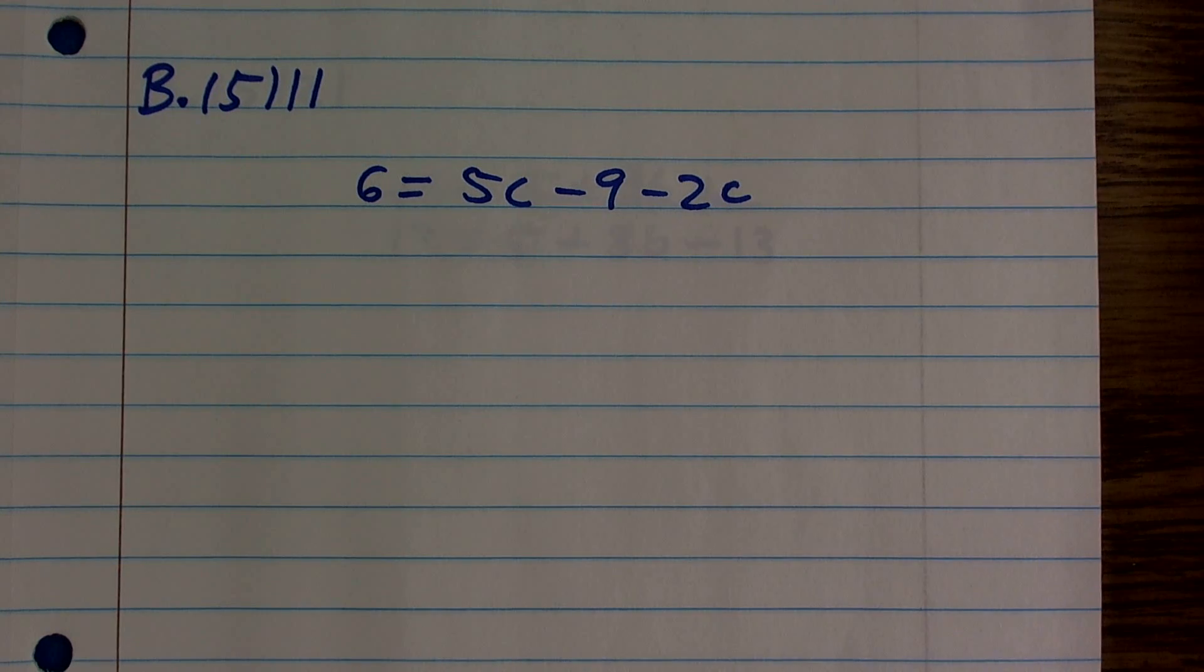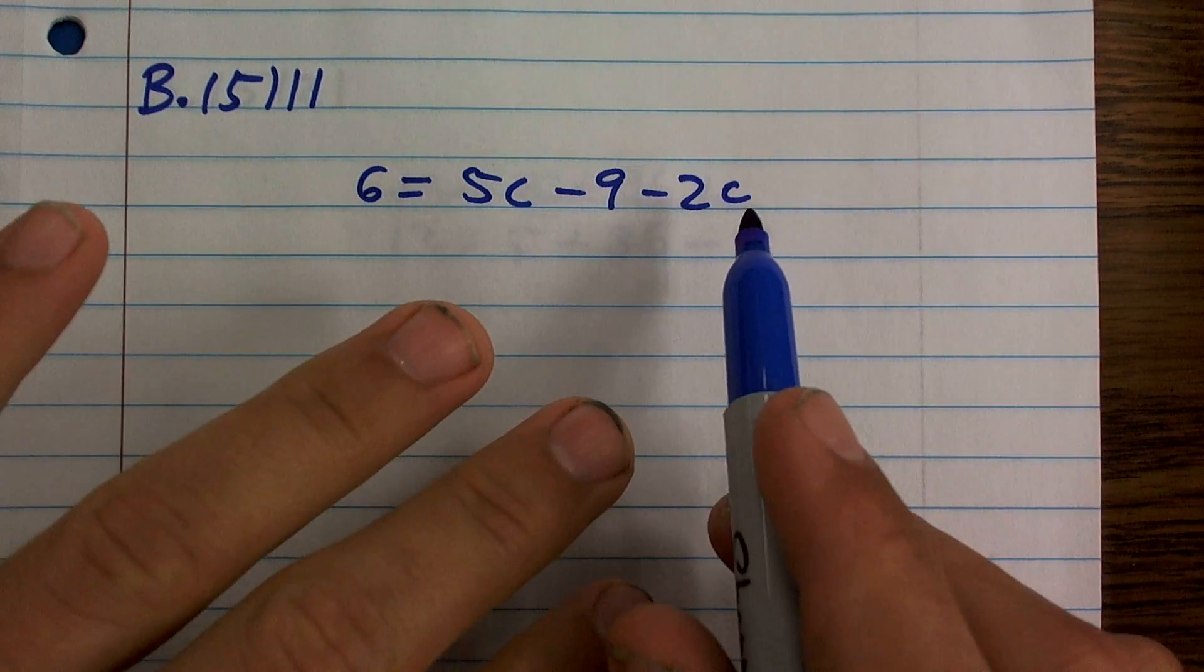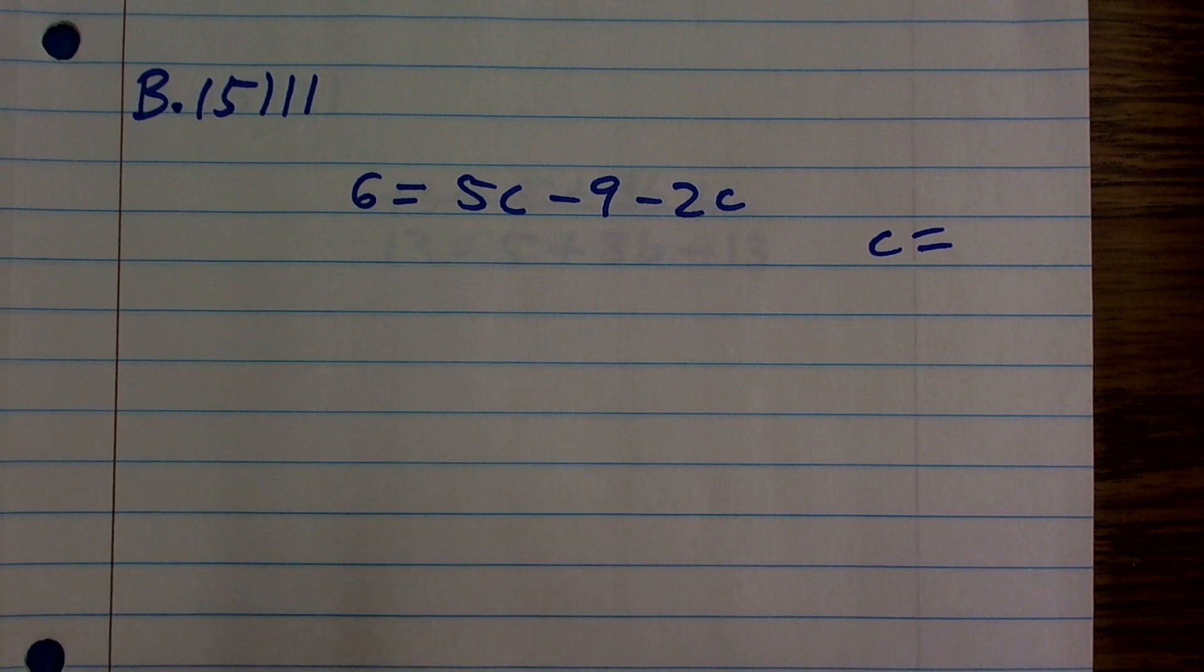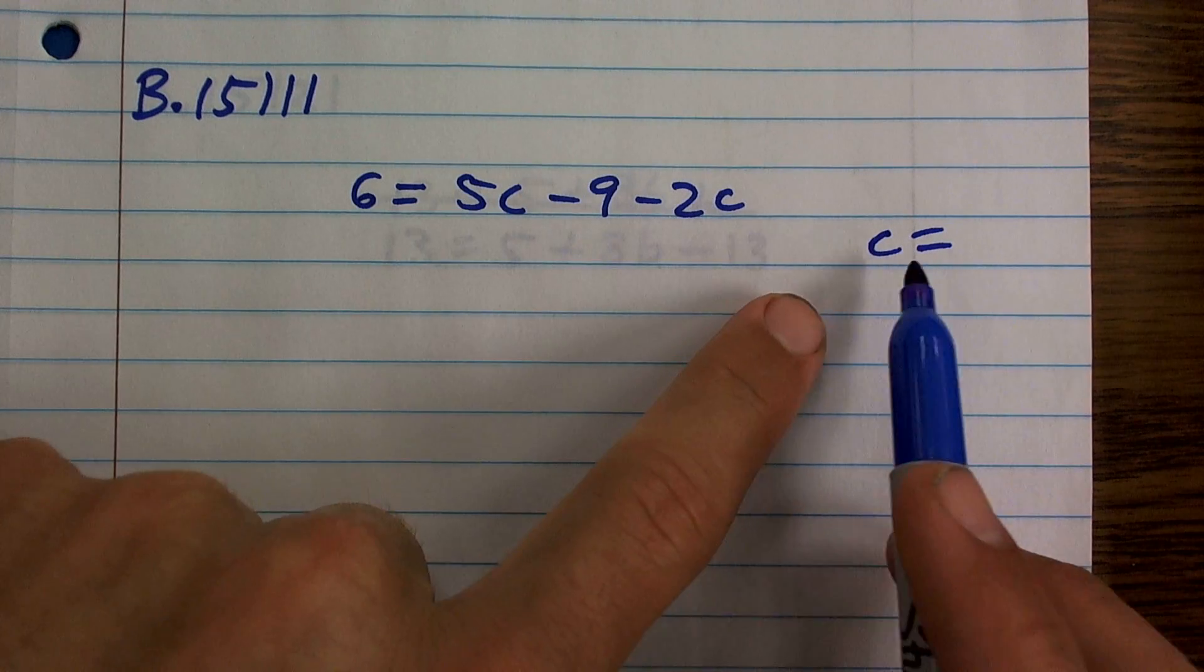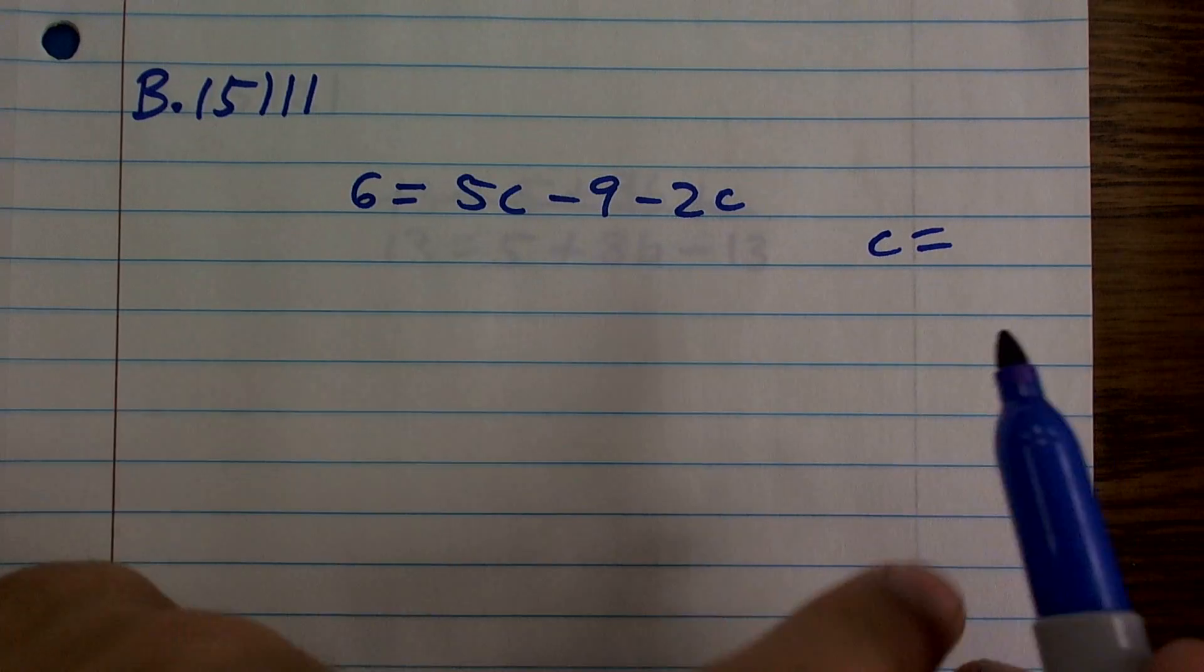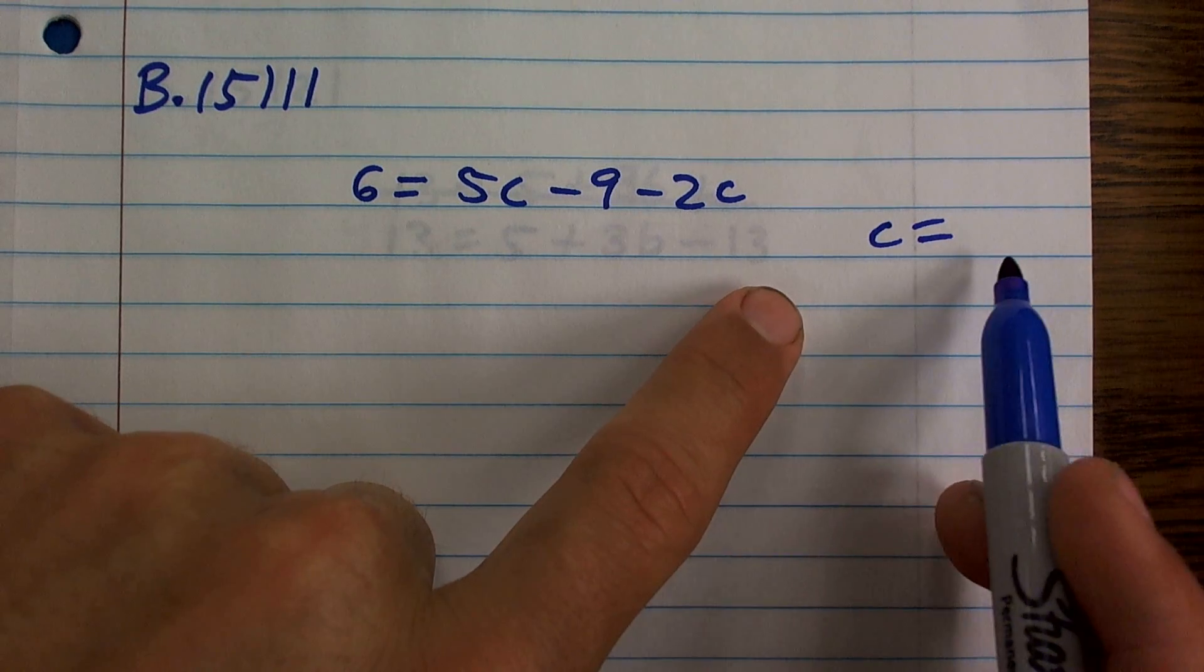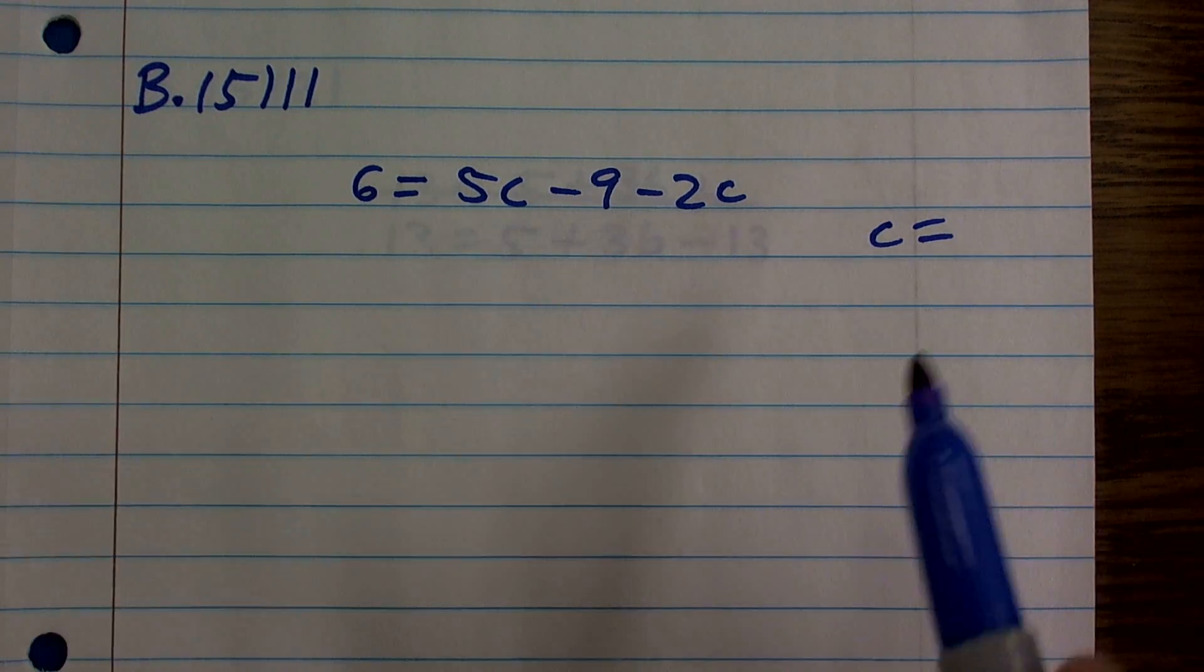Remember, when trying to solve an equation for a variable, we need to get our variable isolated. It's so important for us to understand we need to get our variable all by itself, so we can say the value of our variable equals this number or this quantity.